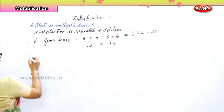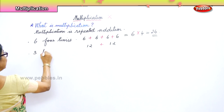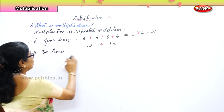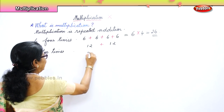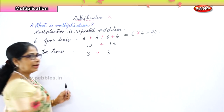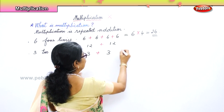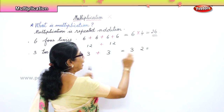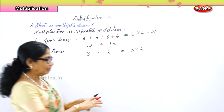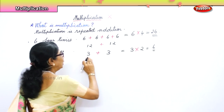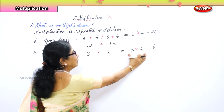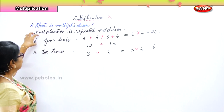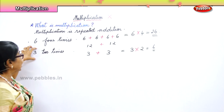When I say three two times — what is three two times? Three and three. That is three plus three. How do you represent it in multiplication? Three into two. Three twos are six. When I say six four times — one, two, three, four. When I say three two times — three plus three. Multiplication is repeated addition.